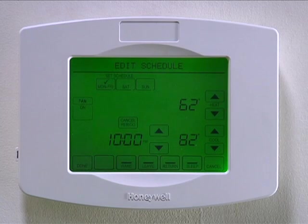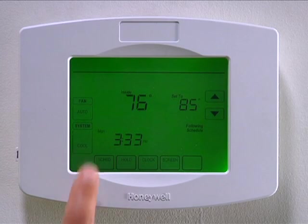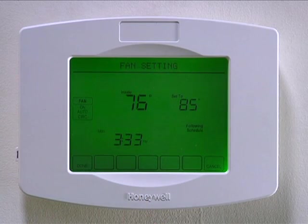You can also customize the fan setting for any time period. To do this while in a selected time period, press fan to select a desired fan setting. The fan can be set to the following settings: On — the fan will operate until the setting is changed; Auto — the fan will operate only when the heating or cooling system is on; Cirque, which stands for circulate — the fan will operate when the heating or cooling system is on and randomly about 35% of all other times. To select a fan setting, press fan to scroll through the fan settings. Once you have selected the desired setting, press done.